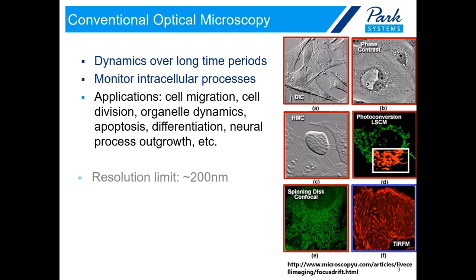However, the resolution of conventional microscopy has light diffraction limits around 200 nm. In practical terms, this means that only cellular structures and objects that are at least 200 to 350 nm apart can be resolved by light microscopy. However, many fundamental biological processes including invading live cells by virus occur at the level of macromolecular complexes in the size range of 10 to 100 nm. This range is beyond the reach of conventional light microscopy, which is why people are looking for additional technological advances to overcome resolution limits.